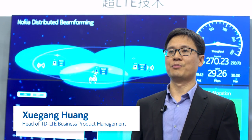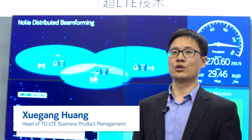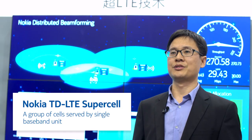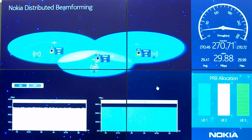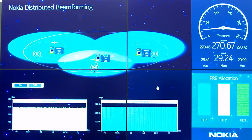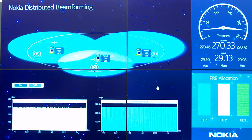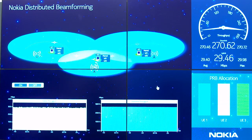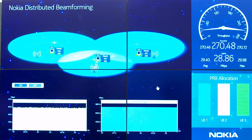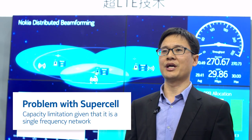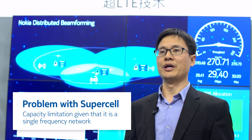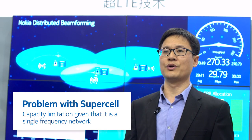Nokia TD-LTE Supercell is a group of cells served by a single baseband unit. It increases cell edge speeds compared with two standalone LTE cells by removing intercell interference. However, there is a capacity limitation given that Supercell is a single frequency network.